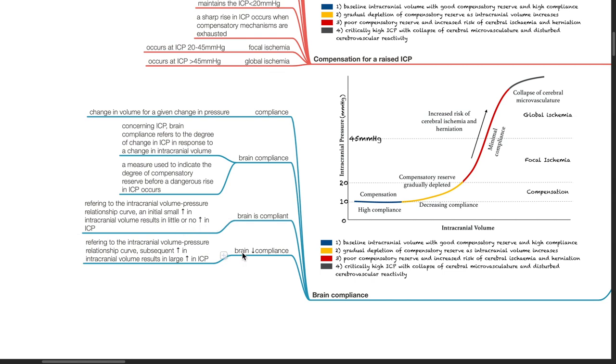When the brain has decreased compliance, referring to the intracranial volume pressure relationship curve, subsequent increases in intracranial volume result in large increases in ICP.